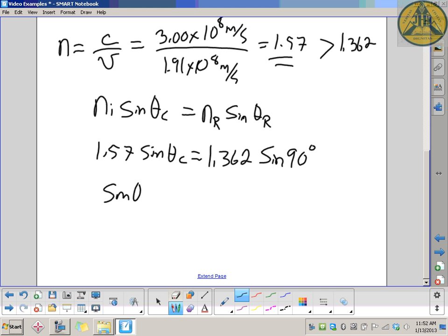Sine of 90 is 1, so on the right side is 1.362. Divide both sides by 1.57. Doing that gives you 0.8675. Critical angle is the inverse sine of that. I'm going to keep four decimal places so you get something close to it, and you should get around 60 degrees as your critical angle.